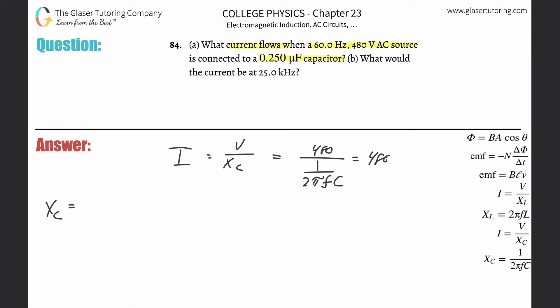So that basically becomes 480 times 2π times the frequency of 60 times the 0.25 micro. So let's move this over a little bit. This becomes 0.25 times 10 to the minus 6 because we need that in farads, alright?